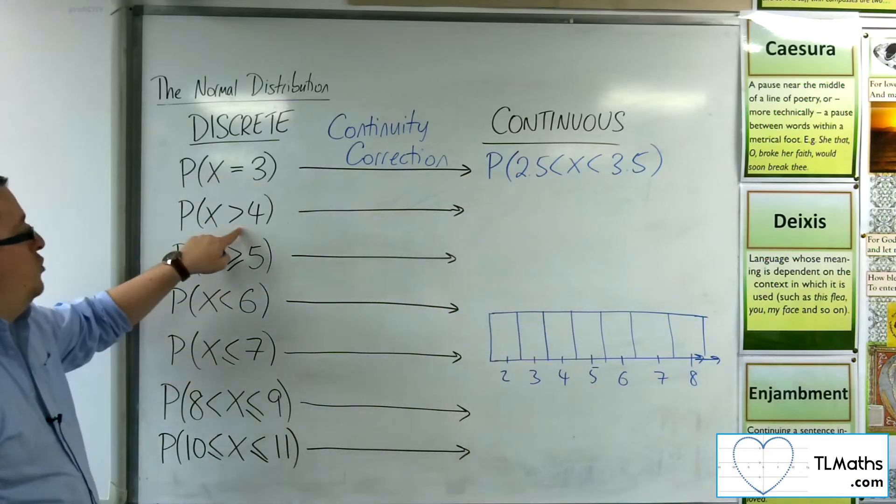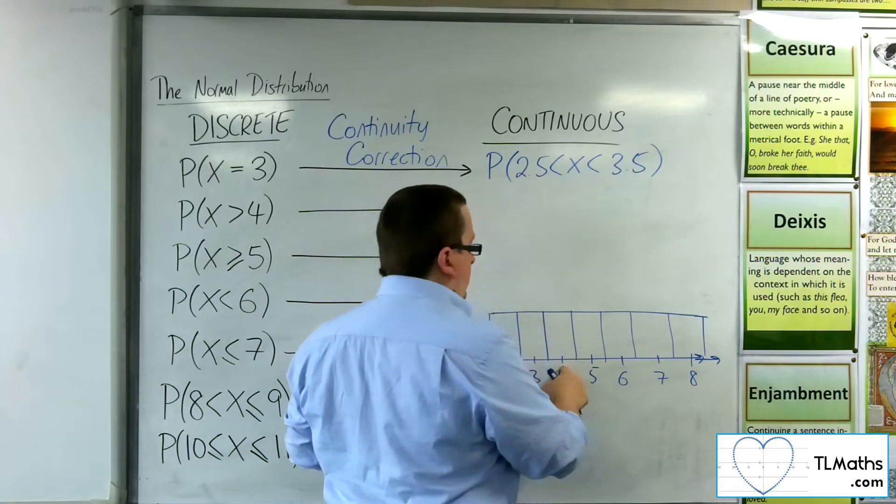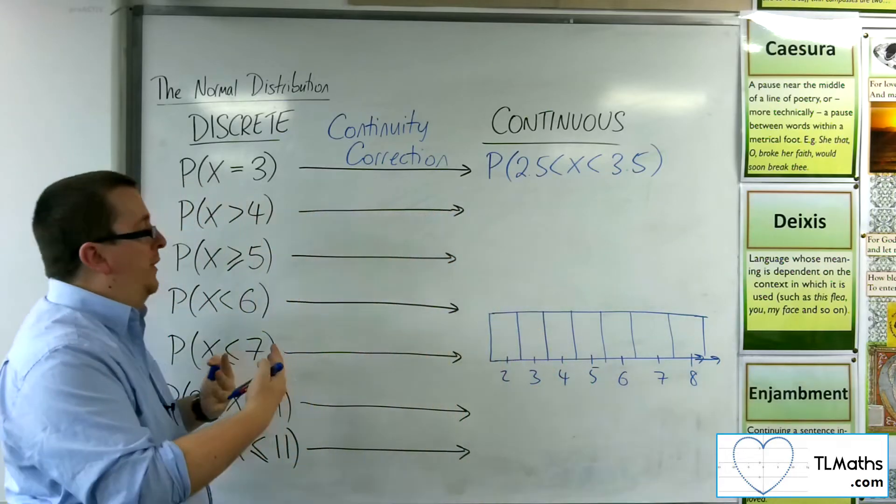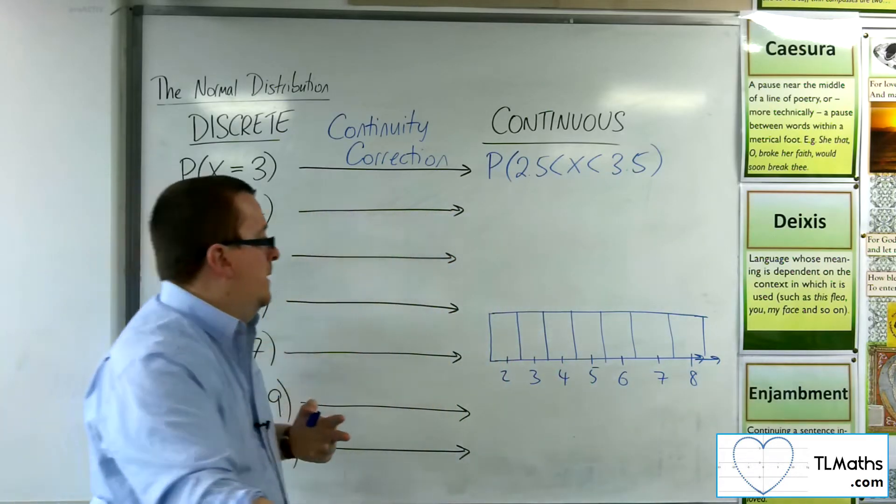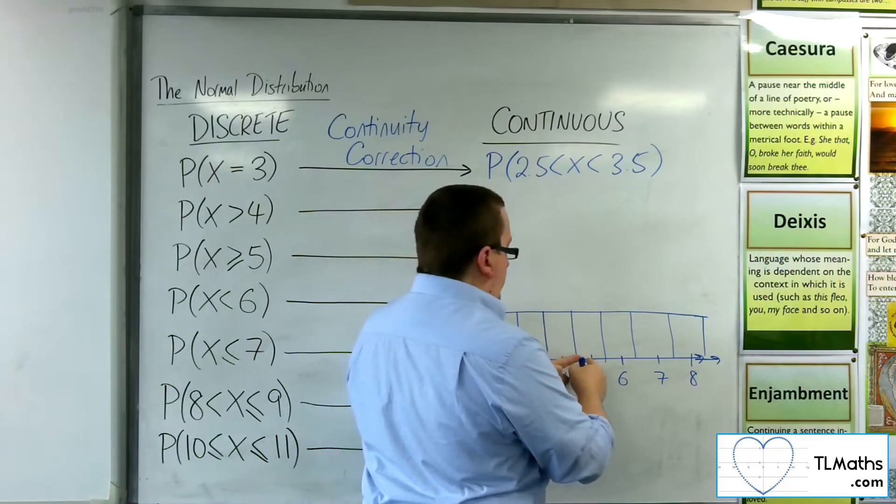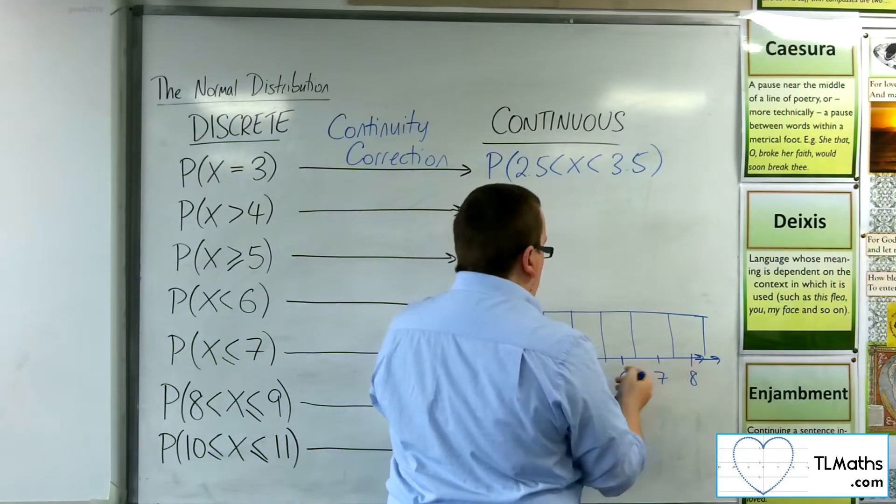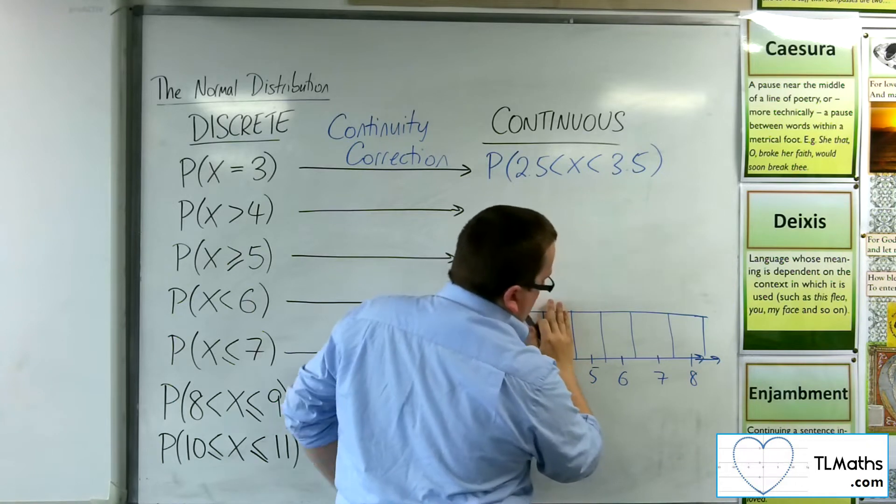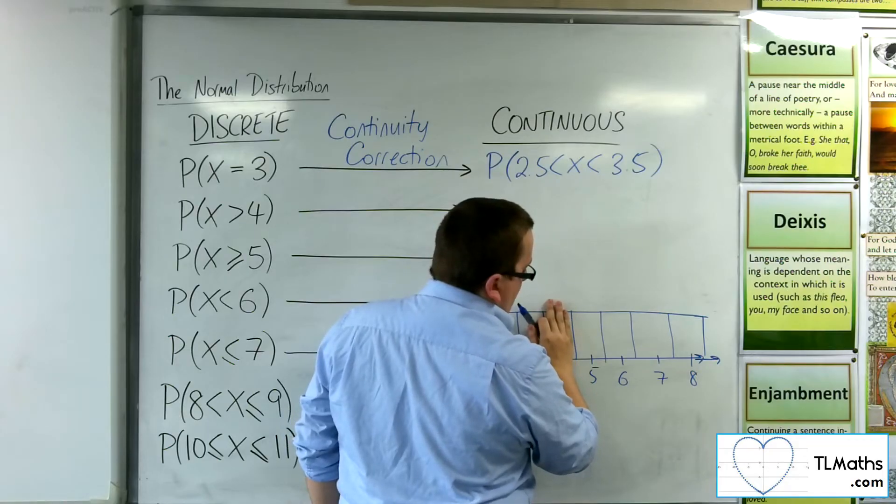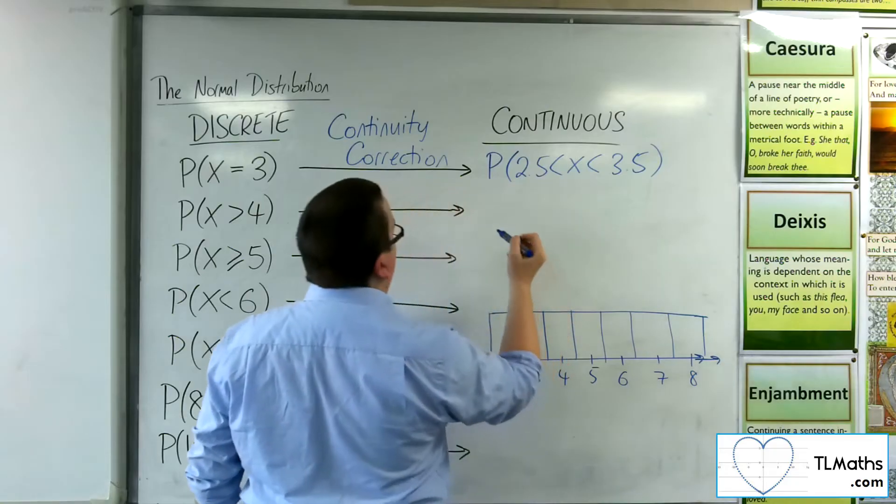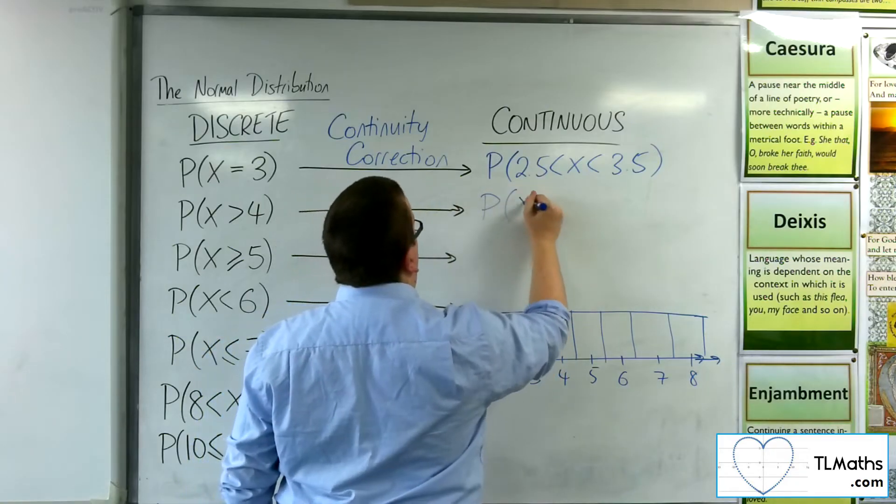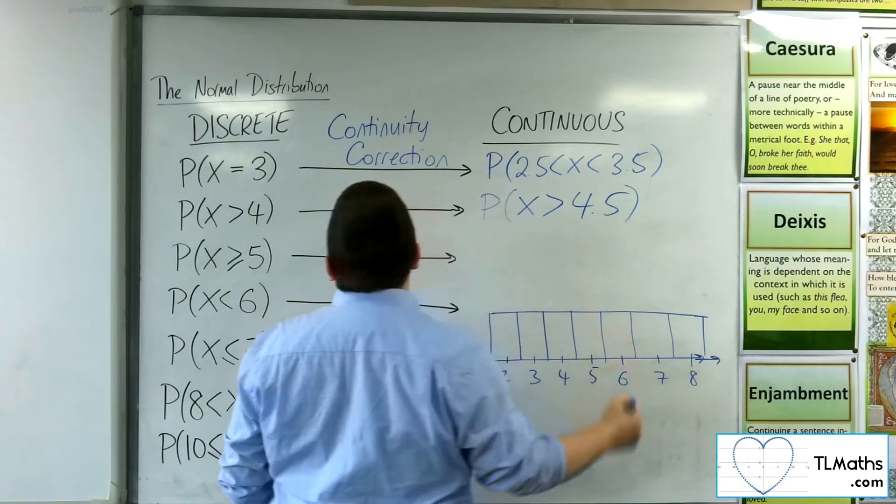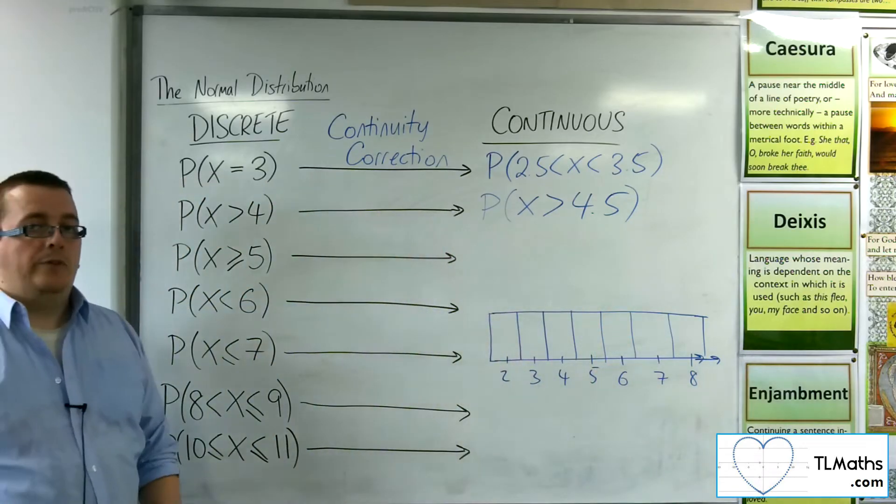If I want greater than 4, that means in binomial terms, 5 or more. So I want to go up to 5 or more. That would be from 4.5 and up. Think of 5 as the bar and then look at the lower boundary, which is at 4.5 and work your way up. So this would be the probability of X being greater than 4.5 in continuous form.